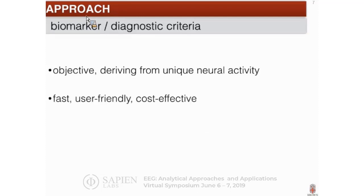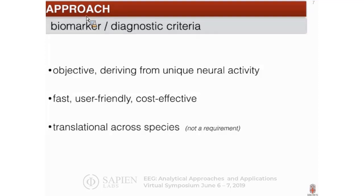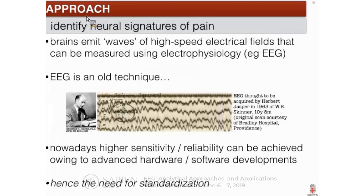The biomarker needs to be quick, practical, and relatively cheap. It needs to be translational and applied across species — this is not a requirement but a preference, specifically for research and development pipelines. As an approach, we honed in on EEG. We also use other methods, but for this talk we will focus on EEG.